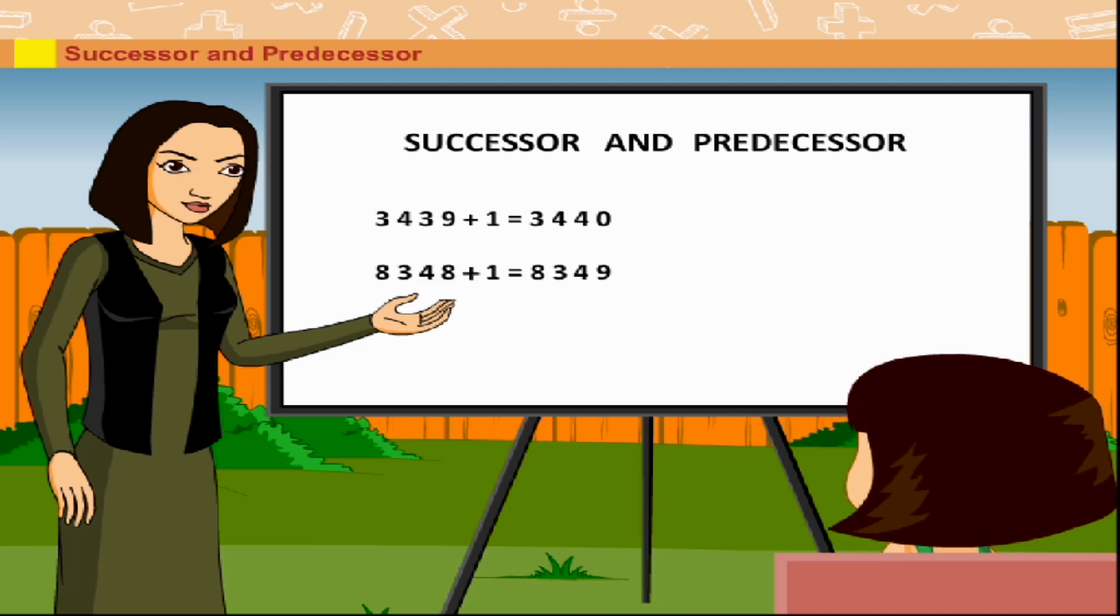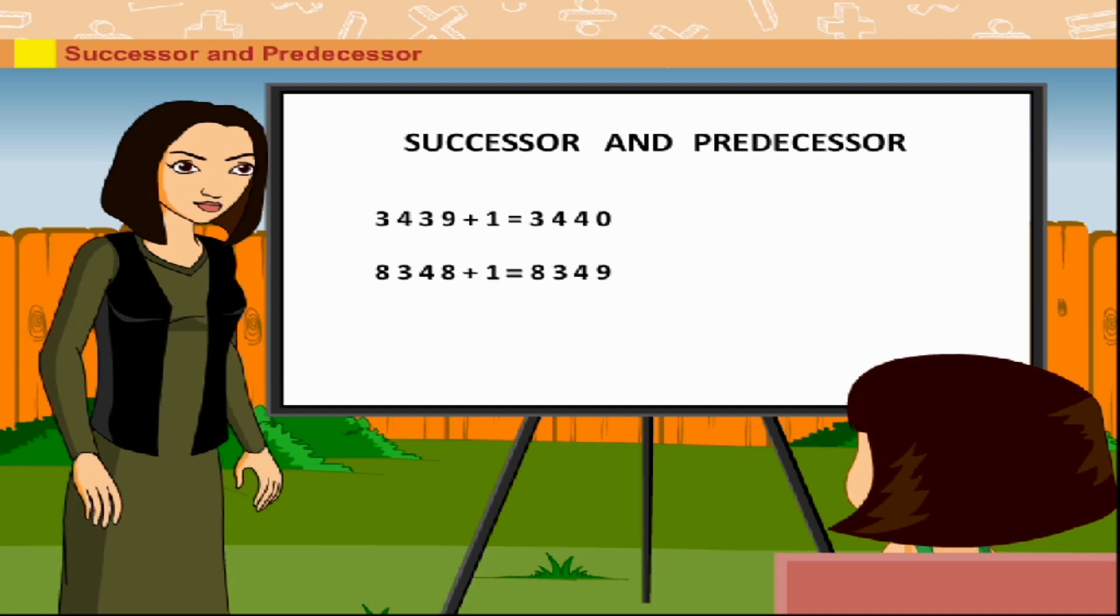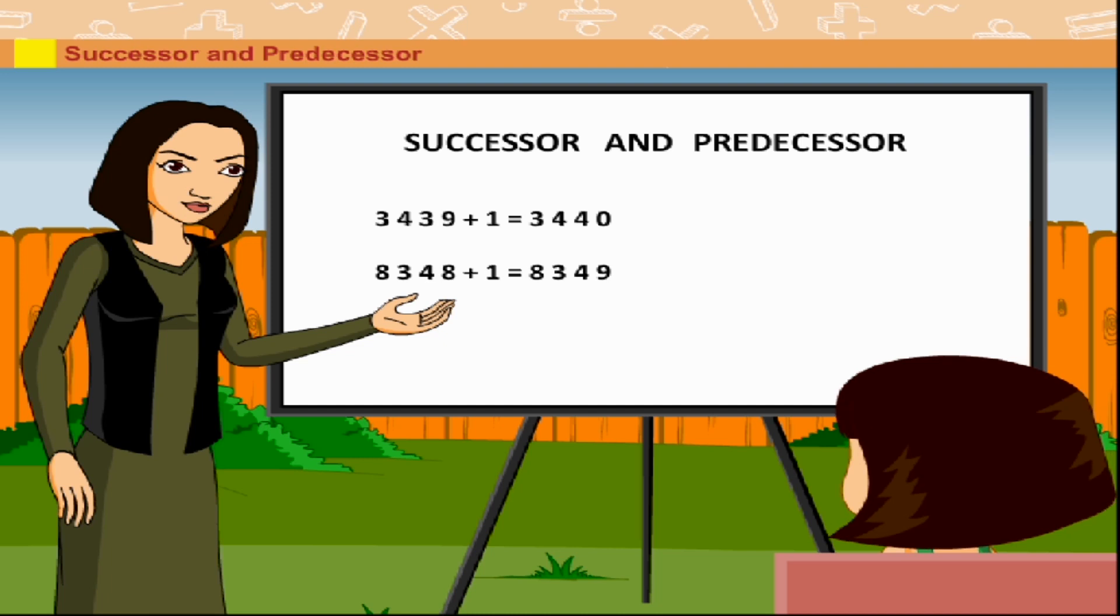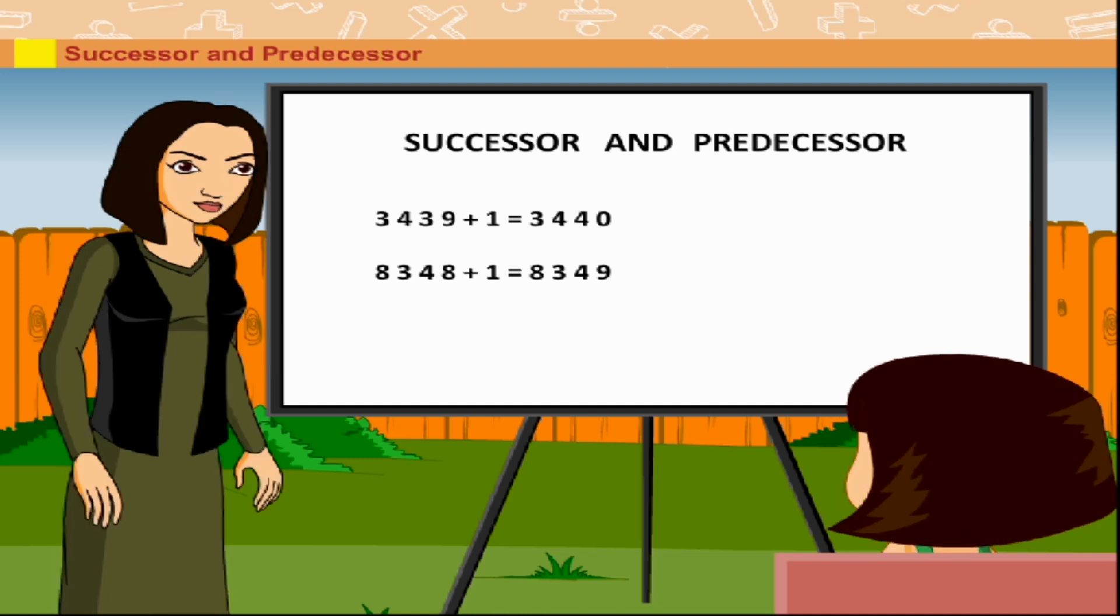8348 plus 1 is equal to 8349. Rani also explains that when we subtract 1 from a number, we get the predecessor of the number. For example,